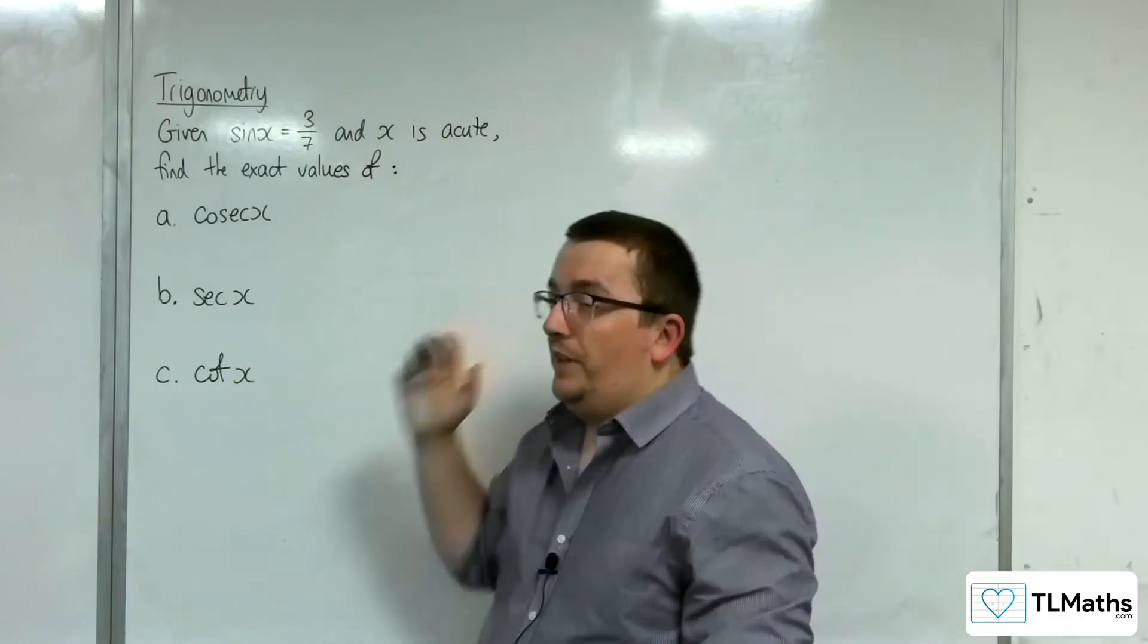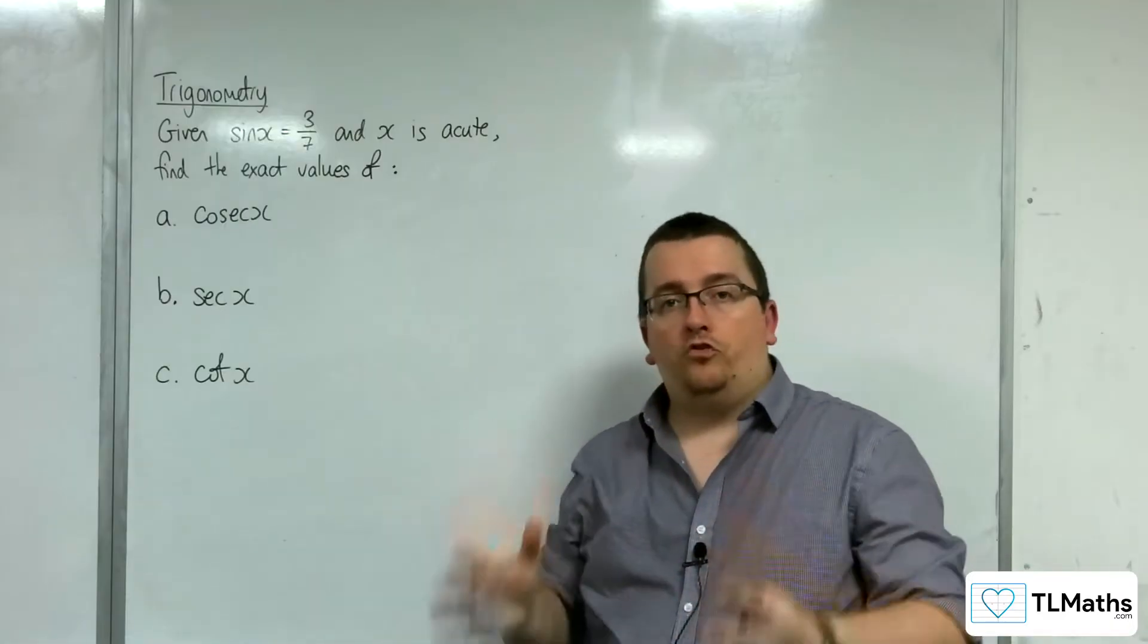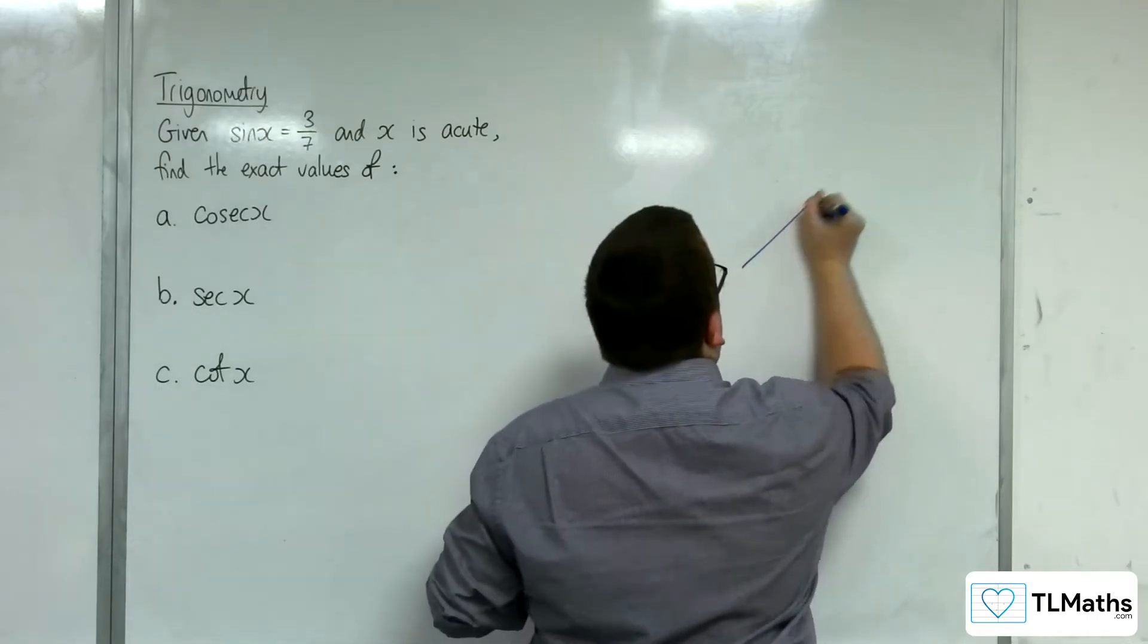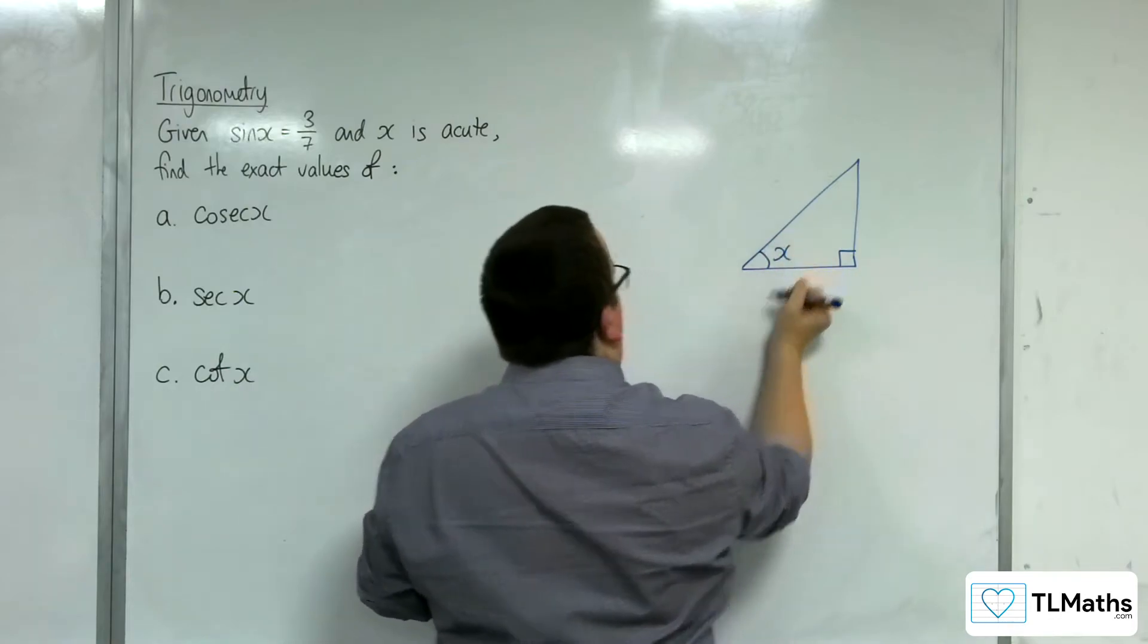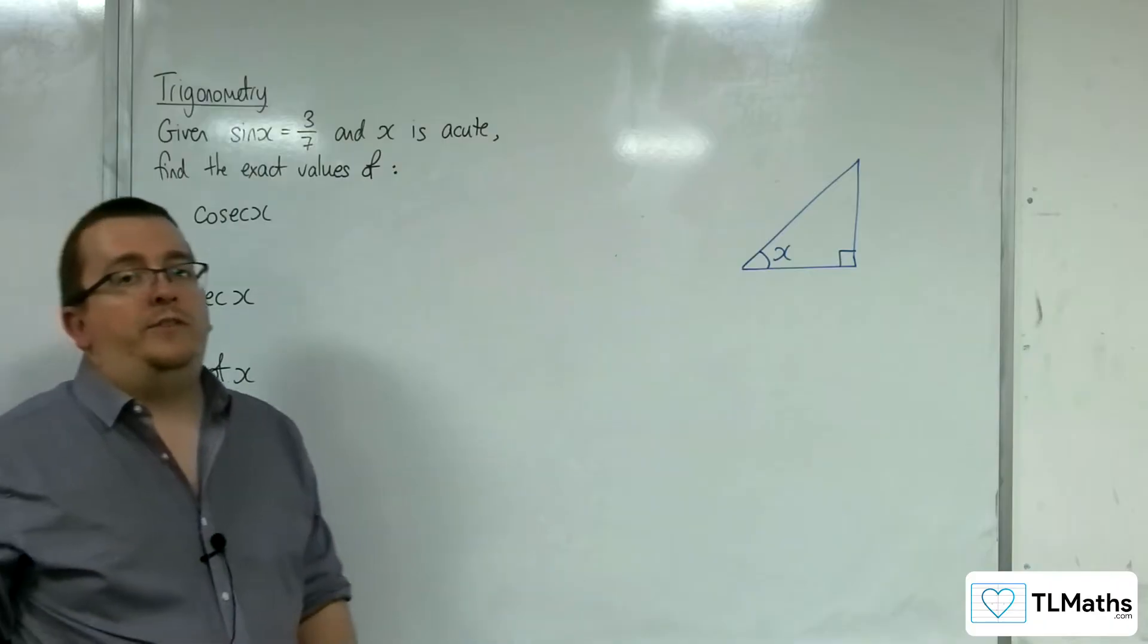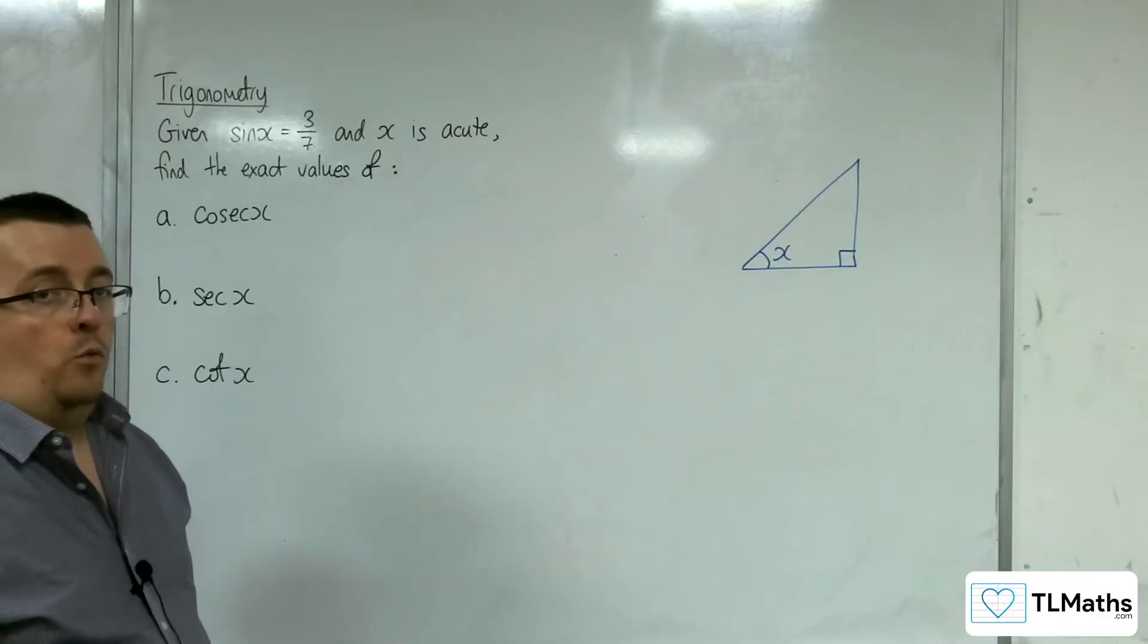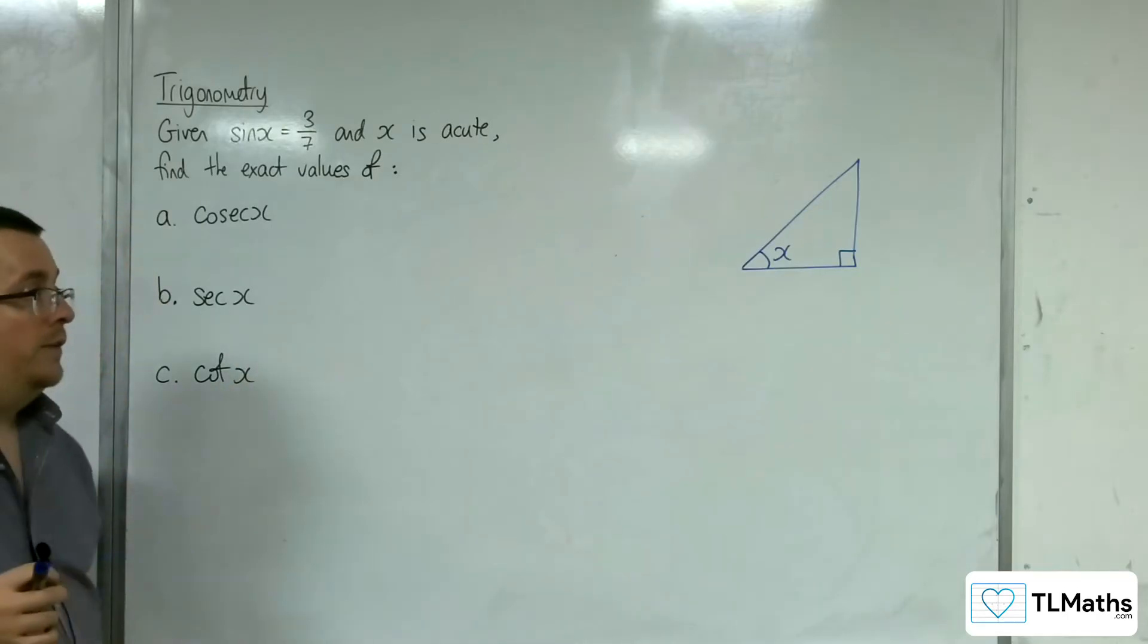Whenever you're dealing with this type of situation, my first instinct is to draw a right-angled triangle with the information you know. Here's my angle x. I've been told x is acute, but even if the question had said x was obtuse, I'd still start by drawing the same right-angled triangle. I'll show you what happens in that situation after I've found these three answers.